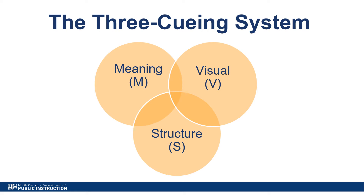Let's start by defining the 3-cueing system. The 3-cueing system is a model which proposes that students rely on meaning, structure, and visual cues in order to identify unknown words encountered in text. Using the 3-cueing system to support word recognition development is a common instructional approach that lacks empirical support and ignores 40 years of evidence surrounding how children build automatic word recognition.